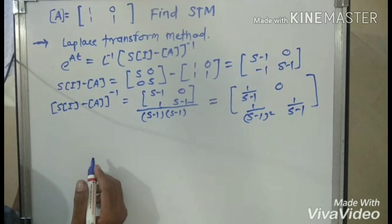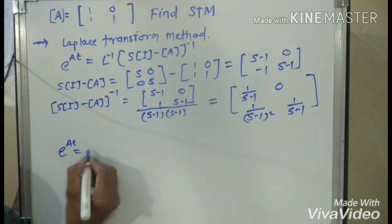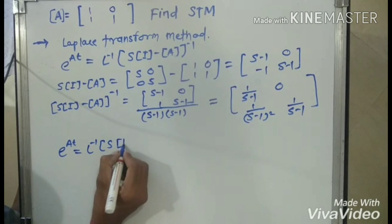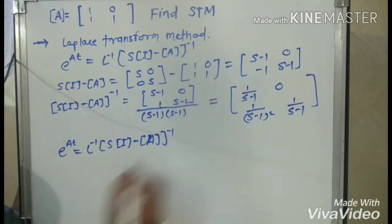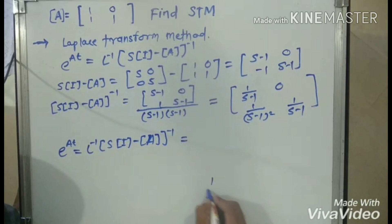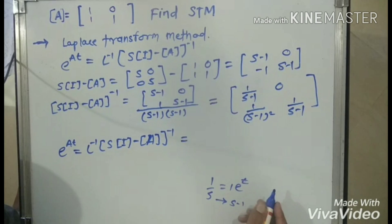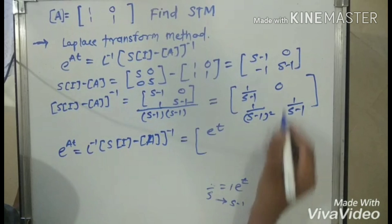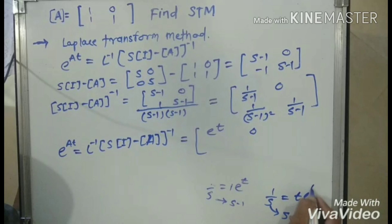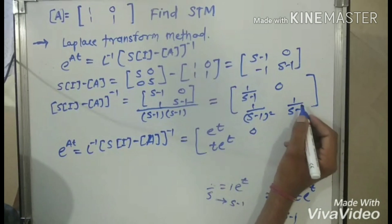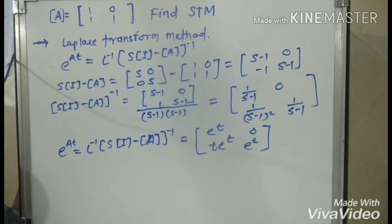Now find the inverse Laplace transform. The Laplace inverse of 1/(s-1) equals e to the power t. The Laplace inverse of 1/(s-1) squared equals t·e to the power t. The Laplace inverse of 0 is 0. The Laplace inverse of 1/(s-1) equals e to the power t. Therefore the state transition matrix is [[e^t, t·e^t],[0, e^t]], confirming that the answer found by the Laplace transform method equals the answer found by the power series method.